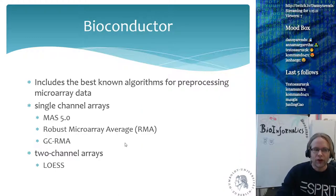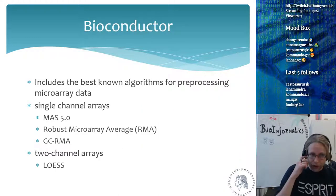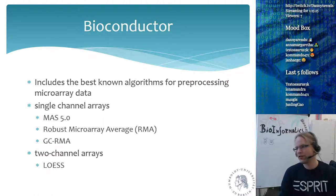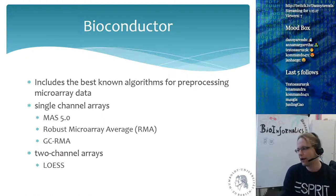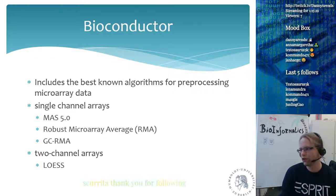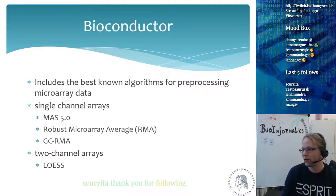Bioconductor has the affy package to analyze Affymetrix arrays and also an Illumina package. These packages include the best-known algorithms for pre-processing microarray data, handling spatial aberrations and other artifacts.